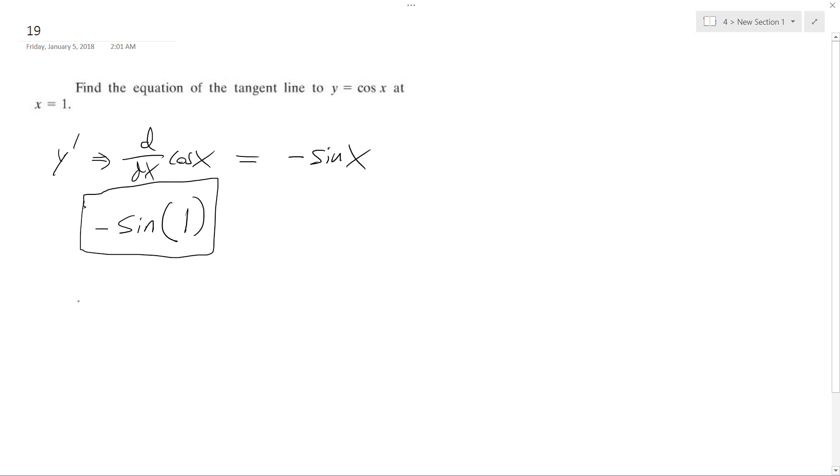So what my slope is going to be is I'm going to use the y minus y1 is equal to m times x minus x1. So I'm going to have y minus...